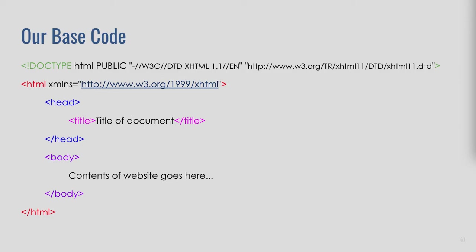You'll also see that I've done some coloring. This coloring is fairly arbitrary — it doesn't matter what colors are there. But if you're using web authoring software like Dreamweaver, it usually colors your tags to help you find the matching pairs, making it easier when editing your code. The other thing you'll notice is my tags are written in lowercase, which is the requirement for XHTML.